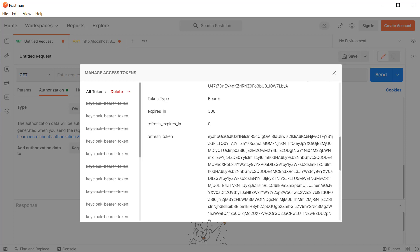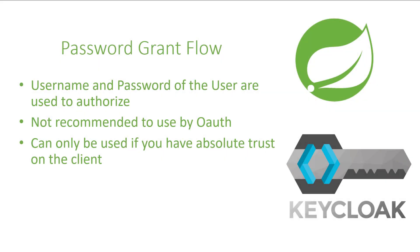I guess you now understand how the refresh token works and how to use it to request a new access token. Now let's see how the password grant authorization flow works. The password grant authorization flow is another, simpler grant type in OAuth 2. As the name suggests, we will use the password of the user along with the username to request a token.